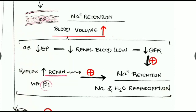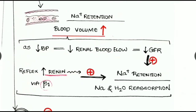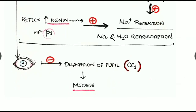With only alpha blockade in place and beta receptors still active, the beta-1 receptors cause a reflex increase in renin secretion. This renin secretion accentuates the condition of sodium and water resorption, resulting in increased blood volume.